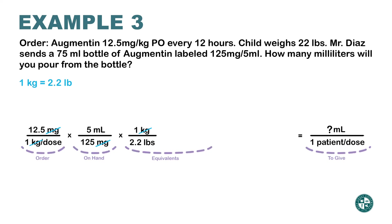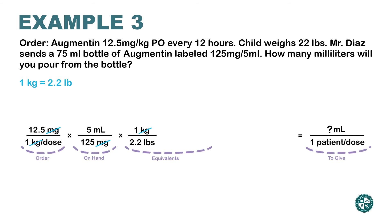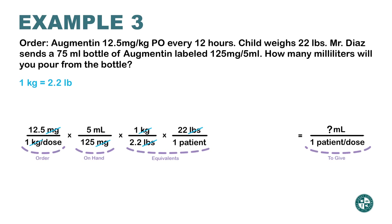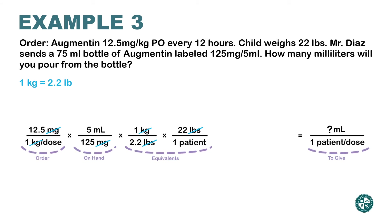I'm using that fraction because the word kilogram cancels out. But now I have the word pounds on the bottom, and I don't want pounds — I want the answer in patient per dose. So the next piece of information needed is that one patient weighs 22 pounds. I use the reciprocal of that fraction to cancel out pounds. Now look at the top: the only word left is milliliter. On the bottom: patient per dose — exactly what I wanted.